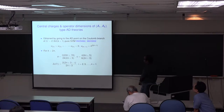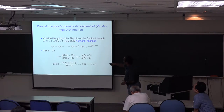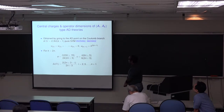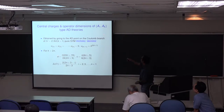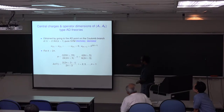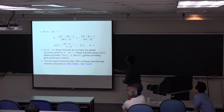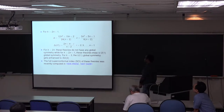These Argyres-Douglas theories are obtained by going to the Argyres-Douglas point on the Coulomb branch of SU(K+1) pure super Yang-Mills. By Argyres-Douglas point, I mean that the Coulomb branch parameters are tuned to have this specific set of values. The central charges are given by these formulas. If K equals 2N, the central charges A and C are of this form, and there are N plus 1 operators with these dimensions. Similarly, if K equals 2N plus 1, the central charges have this form, and again N plus 1 operators with dimensions given by this formula.